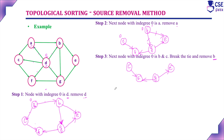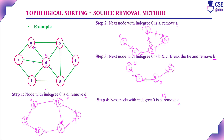Next step: the same procedure. Every step we find one node with in-degree 0 and remove it from the graph. The next nodes with in-degree 0 are C and G. Break the tie and remove C. After removing C along with its edges, the resultant graph will contain F, G, and E.